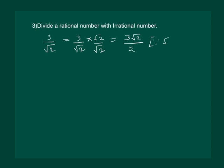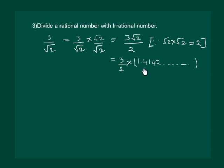This gives us 3 by 2 into the value of root 2. We know that this will be an irrational number. So we can say that on dividing a rational number with an irrational number, our result will be an irrational number.